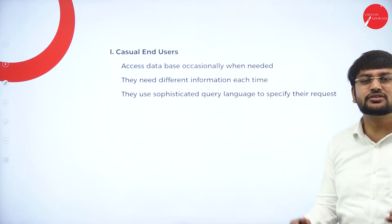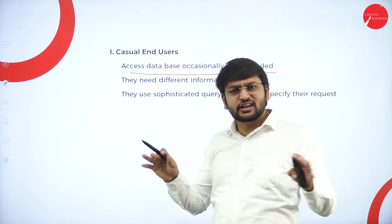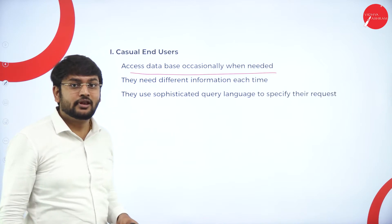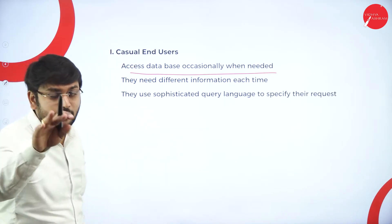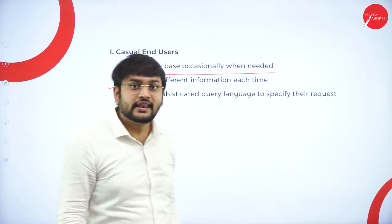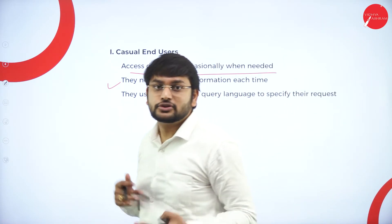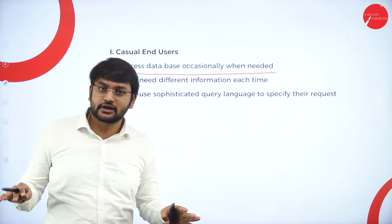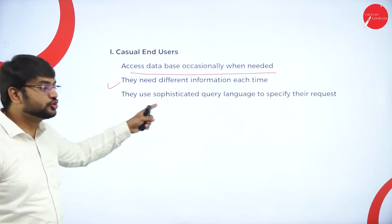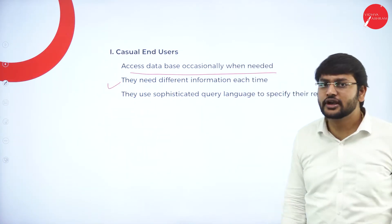The first type is casual end users. They access the database occasionally when needed — they are not regular users. Whenever they need it, they use it occasionally. They need different information each time. For example, comparing it to a Google search, whenever you use it you need a different type of data. They also use a sophisticated query language to specify their requests. This is what we call casual end users.